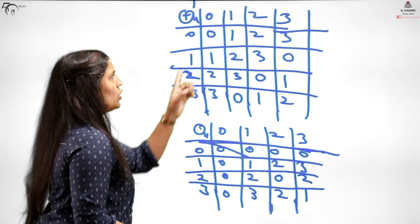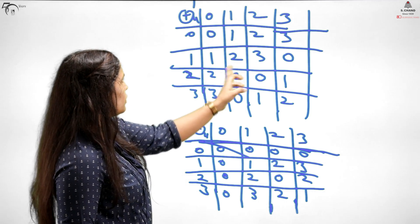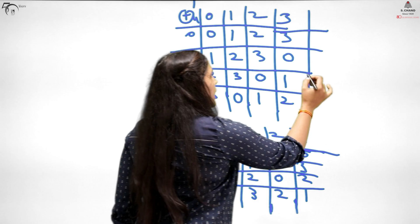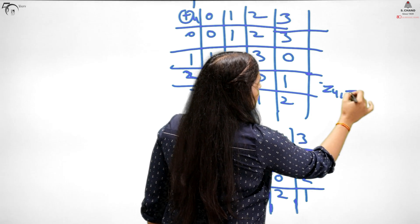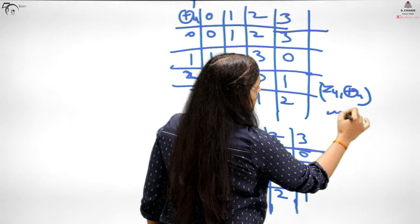Now look at the table. Here see 0, 1, 2, 3, then 0, 1, 2, 3, then 0. Everything is again appearing. From this you can see Z4 plus modulo 4 is a group.